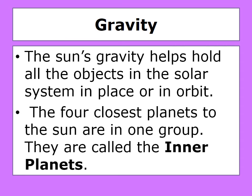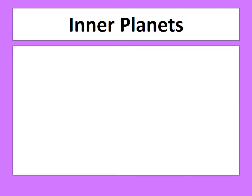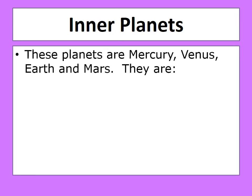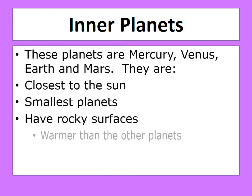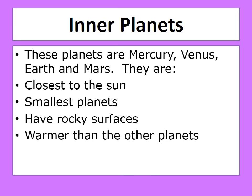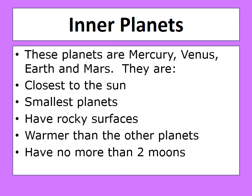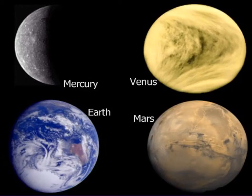The four closest planets to the sun are in one group and they are called the inner planets. These planets are Mercury, Venus, Earth, and Mars. They are closest to the sun, the smallest planets, have rocky surfaces, are warmer than the other planets, and have no more than two moons.